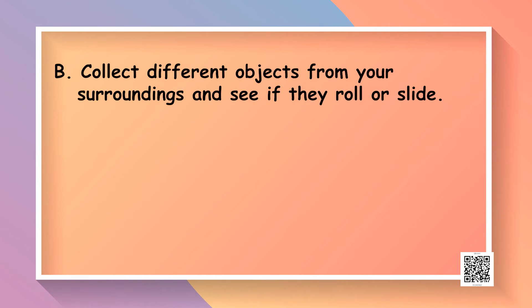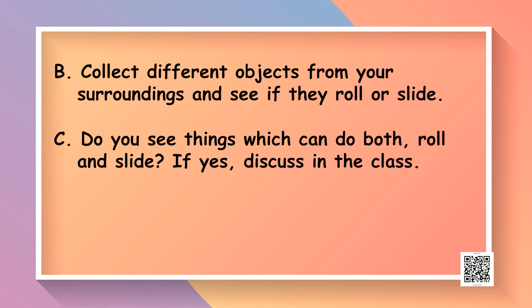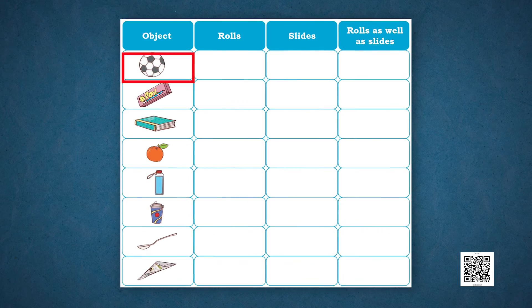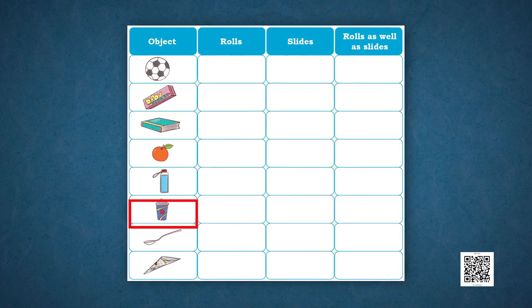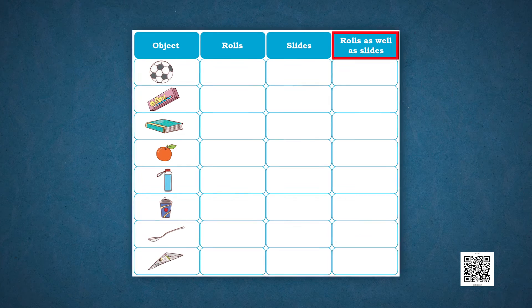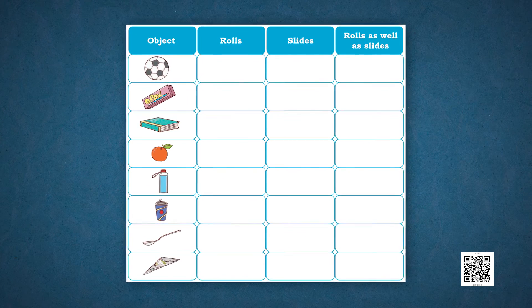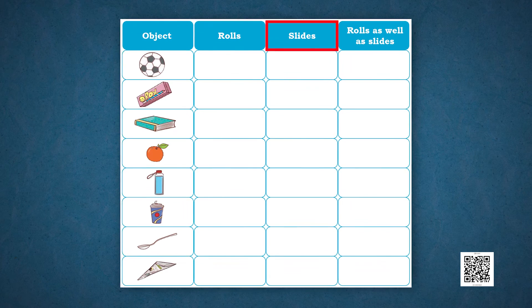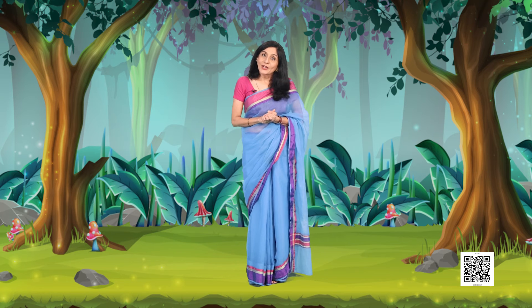Now look around from your surroundings. Collect some objects and see if they roll or they slide. You could be at home, in your classroom, or in a park. We have shown a table on the screen. On one side of the table you would be seeing some objects, and against each object think and write if it would slide, roll, or do both. There may be some objects that will do both — roll and slide. You can also discuss with your friends, or there is a teacher to help you out.